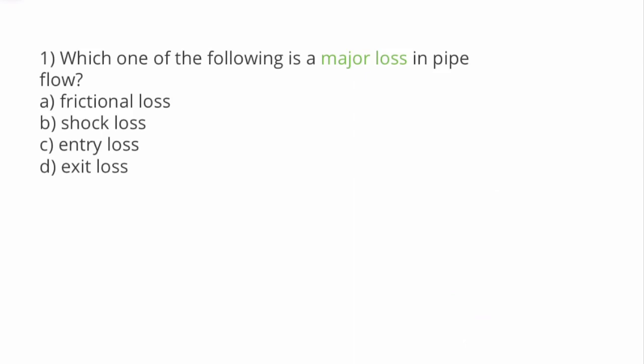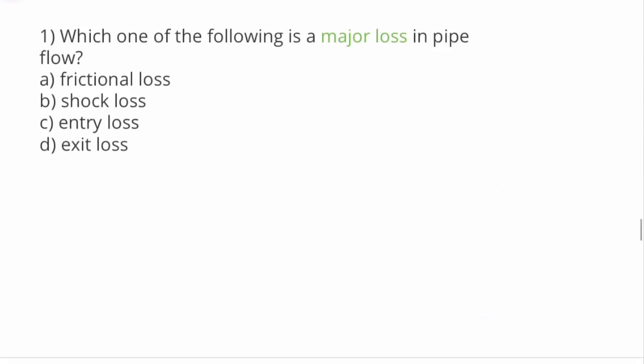This is minor loss. In this case, there are many categories. Suppose pipe enlarges, then contracts. Entry, entrance loss, exit. Then pipe bend at the end, there are these losses. So minor loss, even bend. In this case, there are minor losses.